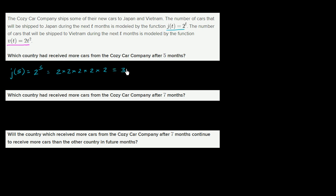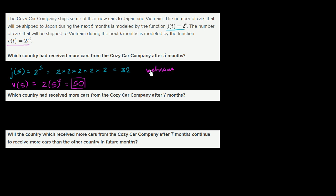So Japan will have received 32 cars. For Vietnam, v(5) is going to be 2 times 5 squared, which is 2 times 25, equal to 50. So based on these two models after five months, Vietnam is going to receive more cars. Vietnam will have received more cars after five months.